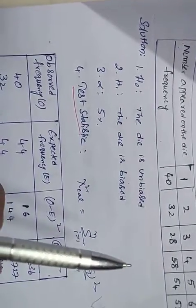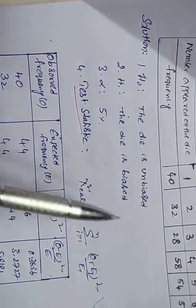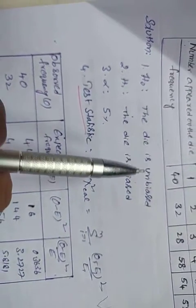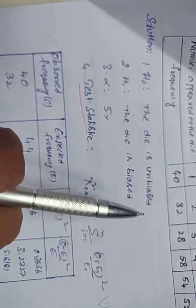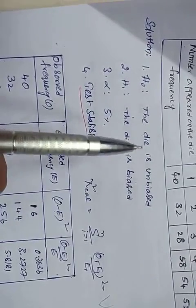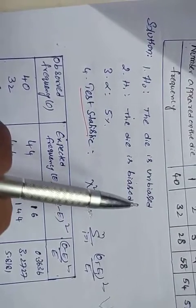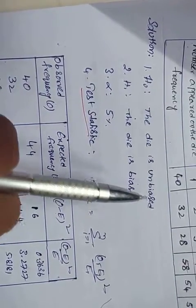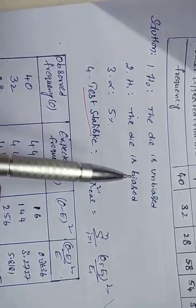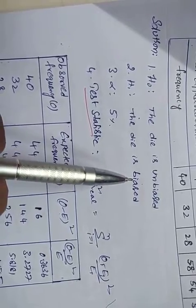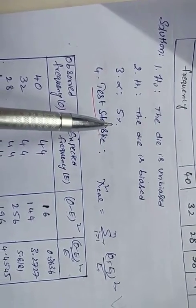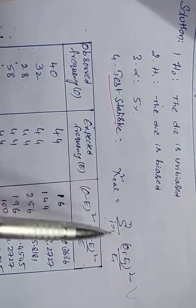The null hypothesis H0 is that the die is unbiased — there is no difference or error. H1 is that the die is biased. Alpha is 5 percent.